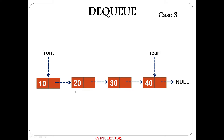Assume a Queue. You will first insert 10, then 20, then 30, and finally 40. The first insert is at the front pointer, and the last insert is at the rear pointer.